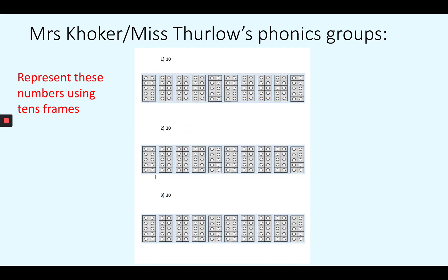If you're in Mrs. Koker or Ms. Thurlow's Phonics Groups, you have to download this sheet here and you're going to be doing the same thing representing these numbers, 10, 20 and 30. You can use counters or you can just colour it in because there is quite small when you print it out. So you can just colour in the circles to represent counters.